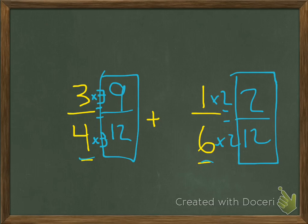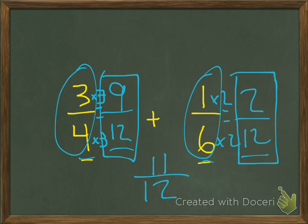Now, since three-fourths equals nine-twelfths and one-sixth equals two-twelfths, they have the same denominator. All we do is add the numerators of nine-twelfths and two-twelfths together, and we get a sum of eleven-twelfths. Therefore, three-fourths plus one-sixth equals eleven-twelfths. That's why we use the skill of rewriting fractions using common denominators.